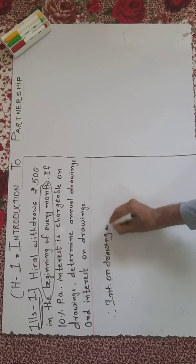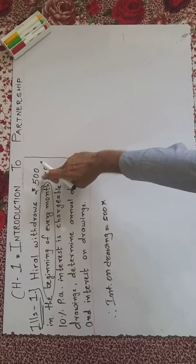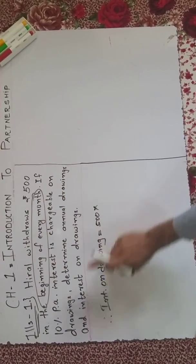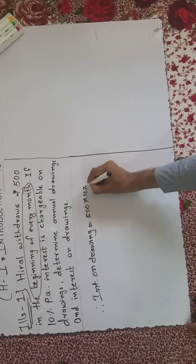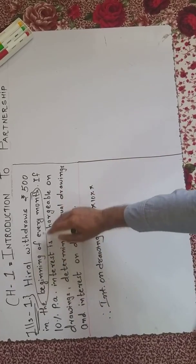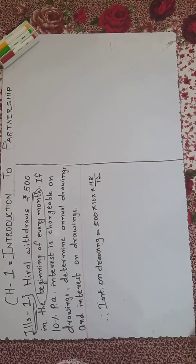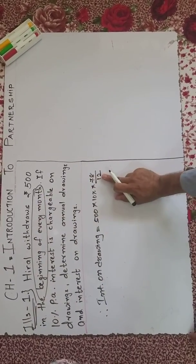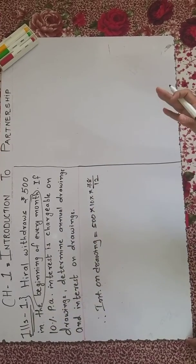Interest on drawing equals 500 multiplied by 10% multiplied by 78 upon 12. This is important: at the beginning of every month, you have to take 78/12.